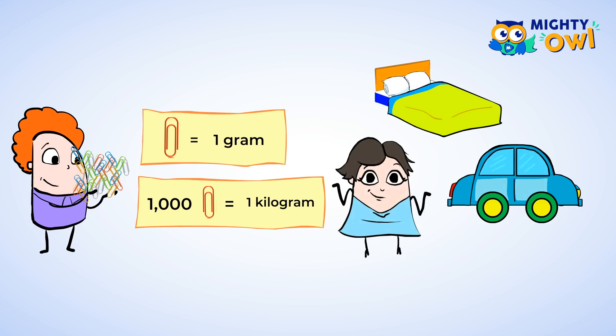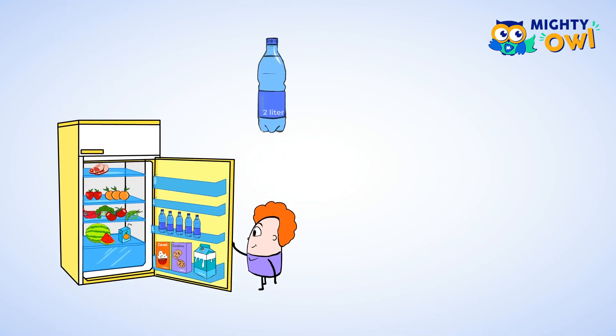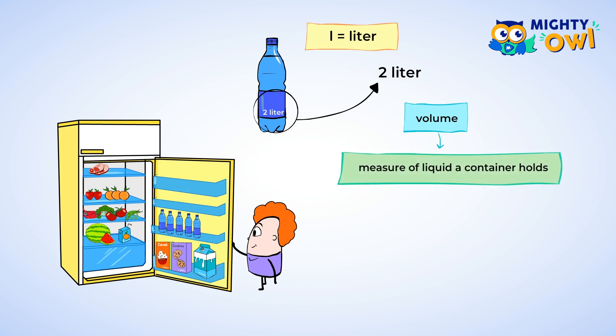Now, what about the things in your refrigerator? You might have a two-liter container of soda. Liters, shown by the letter L, are used to measure the volume. Volume measures the amount of liquid a container holds.